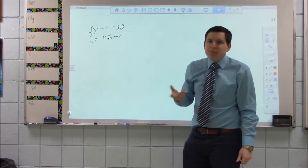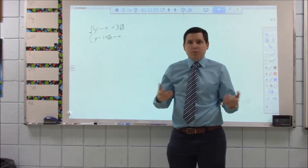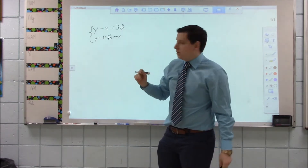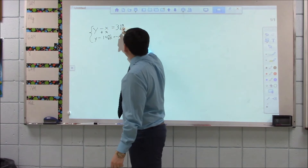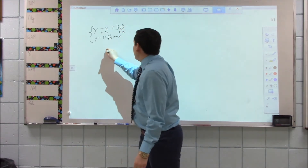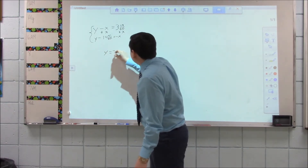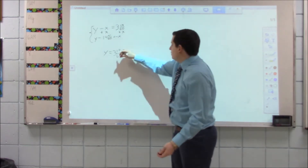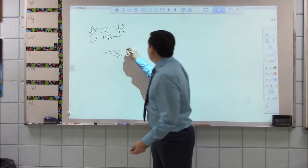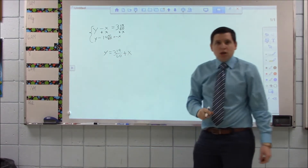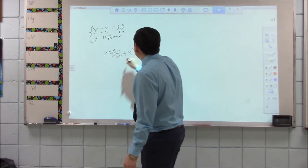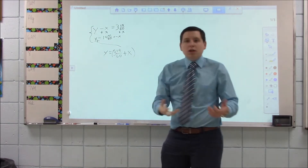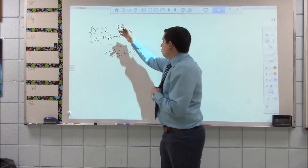Because the x is negative, I could isolate that, but then the last step would need to be dividing both sides by negative one to make it positive. So, isolating y in the equation y minus x equals 3 and 19/60, I add x to both sides, giving me y equals 3 and 19/60 plus x. The fraction is over 60 because there are 60 seconds in a minute, so this represents 19 seconds. Now, because I know what y equals, I can plug that in for y in the second expression, leaving only one variable x to solve for.